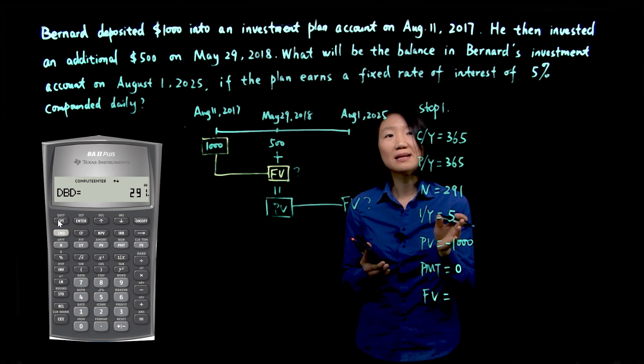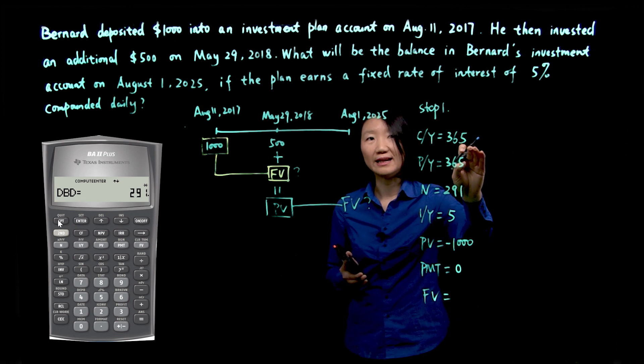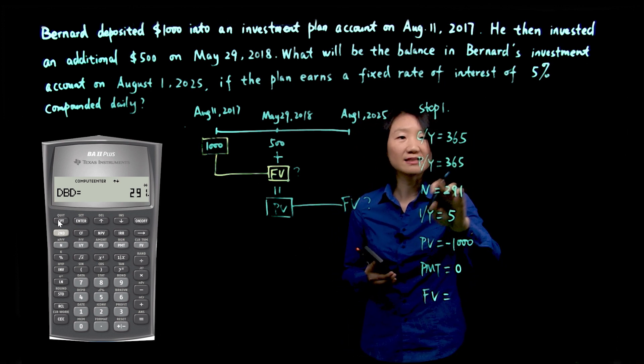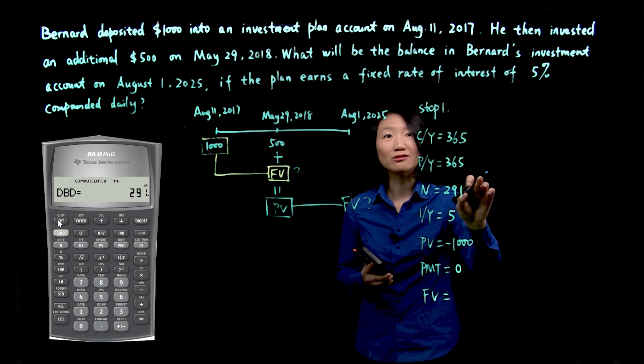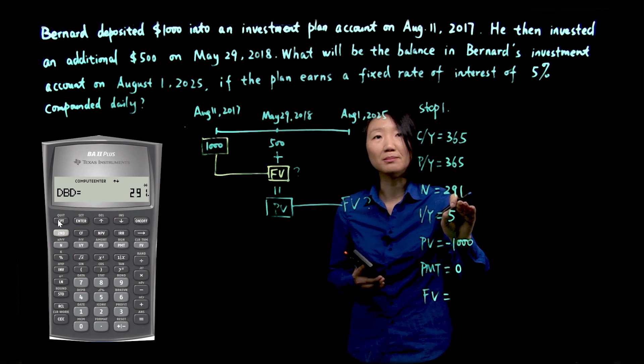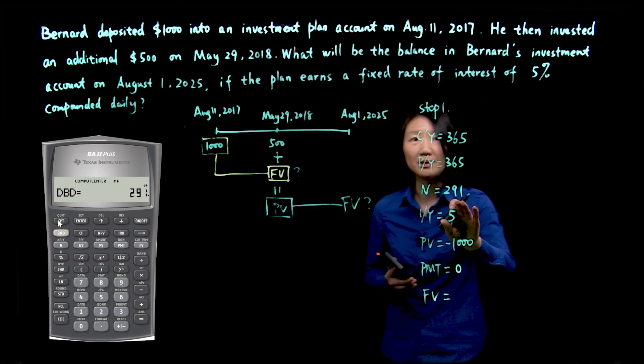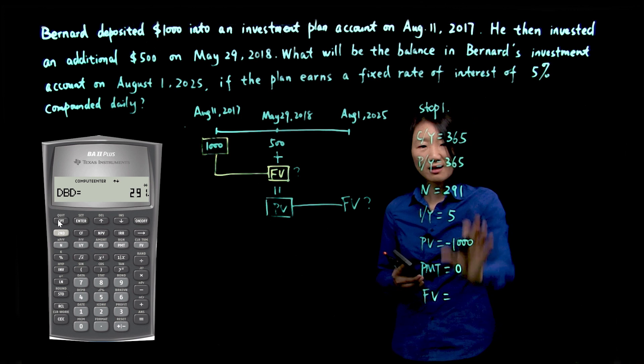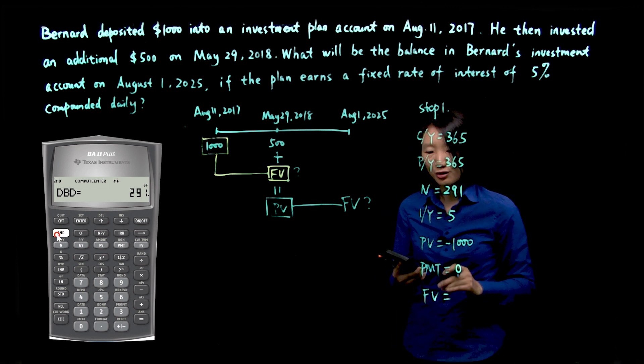Now if you see some questions that are not compounded daily, say it's compounded monthly, then you make sure this 291 days, you have to divide by 12 to give your number of months. But in this case, we're fine with the number, because it's compounded daily. Now with all this information, let's calculate future value.